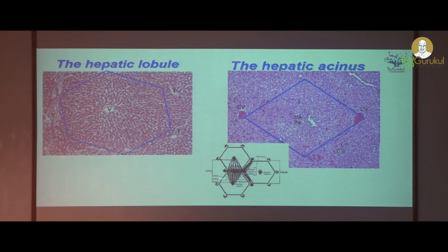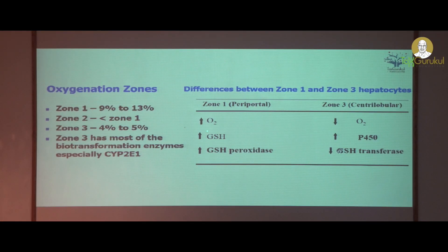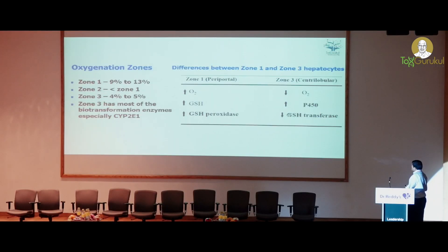To understand the importance of these zones: in zone 1 we have 90 to 13 percent oxygenation, whereas in zone 2 there is less than 1 percent and in zone 3 there is 3 to 5 percent. Zone 3 is most important as it contains the biotransforming enzyme, the CYPs. The zone 1 periportal area has more oxygen and also has GSH, that is glutathione and glutathione peroxidase, so it is less susceptible to toxicants. Whereas in zone 3 we have decreased oxygen levels, increased CYPs for biotransformation, and decreased GSH and glutathione transferase.